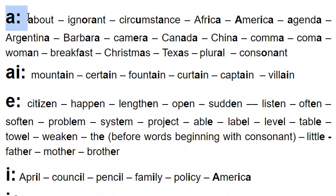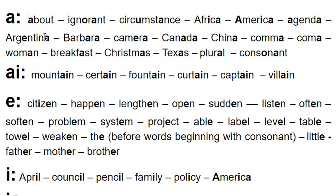We're going to take a look at the schwa in different words as it takes place in different spellings. For example, the spelling A. This first letter of the alphabet, usually when it's unstressed, is going to be pronounced like schwa. All of the vowels which are pronounced like schwa are going to be in bold letter. Let's begin by pronouncing with the letter A — you can practice pronouncing after me.